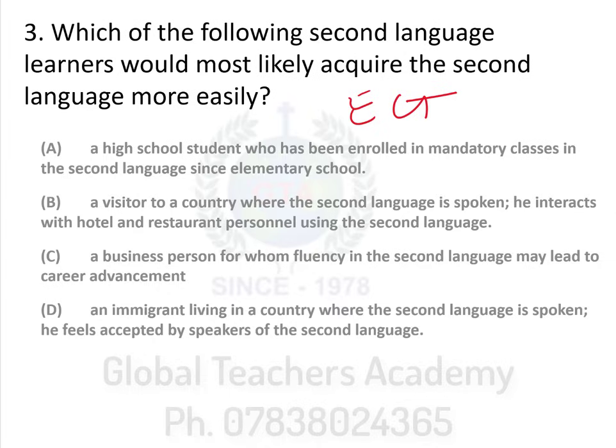The question says: which of the following second language learners would most likely acquire the second language more easily? Option A: a high school student enrolled in mandatory classes in the second language since elementary school. Option B: a visitor to a country where the second language is spoken, who interacts with hotel and restaurant personnel using the second language. C: a business person for whom fluency in a second language may lead to career advancement. D: an immigrant living in a country where the second language is spoken, who feels accepted by the speakers of the second language.